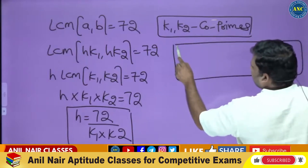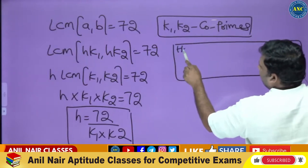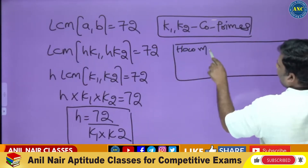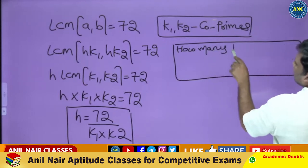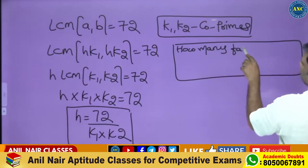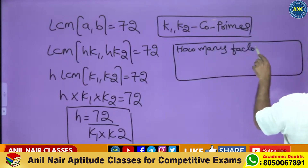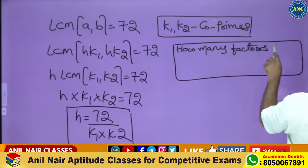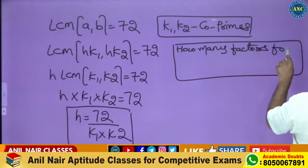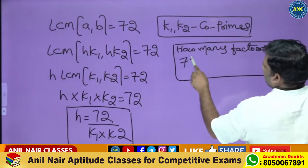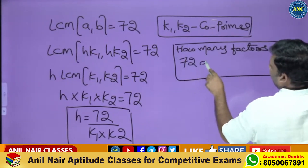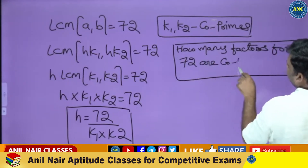The question is: how many factors of 72 are co-prime to each other?